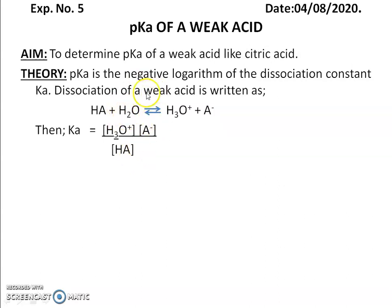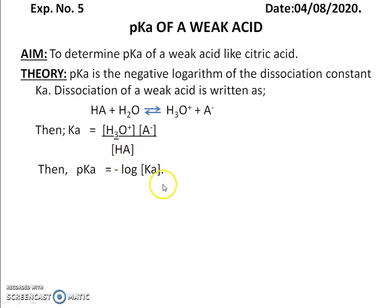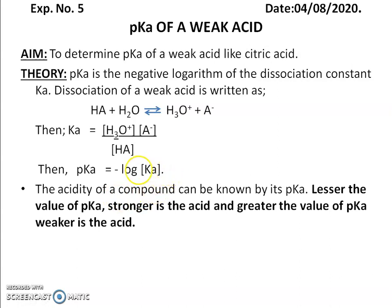Here we are not considering water because water concentration does not significantly affect the rate of the reaction. pKa is equal to the negative logarithm of the dissociation constant, where p means negative log. The acidity of a compound can be known by its pKa value: the lesser the value of pKa, the stronger the acid, and the greater the value of pKa, the weaker the acid.